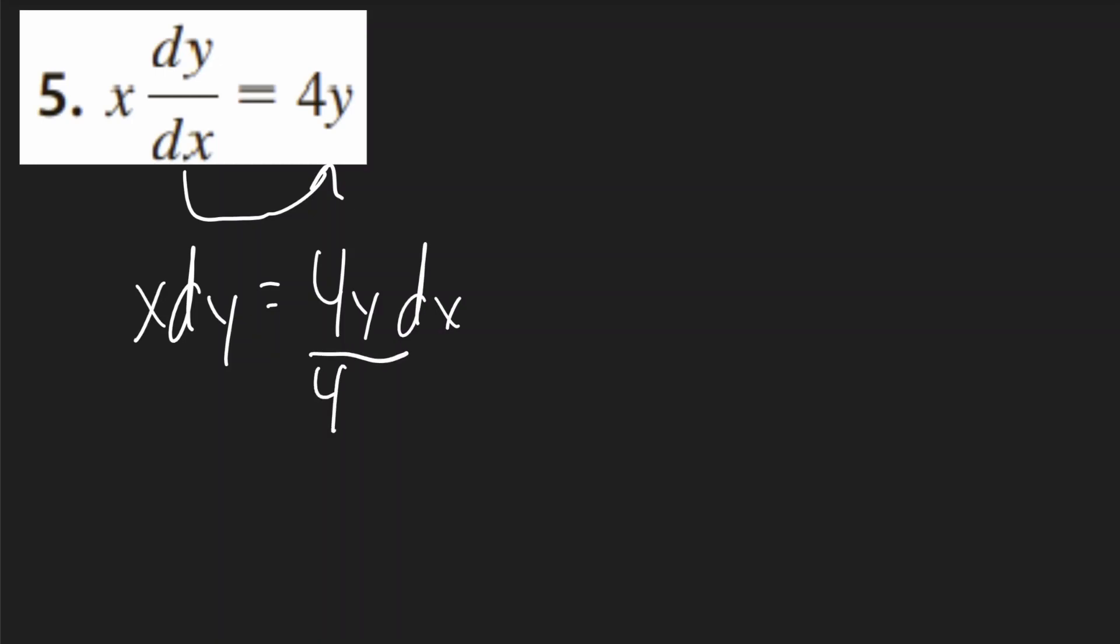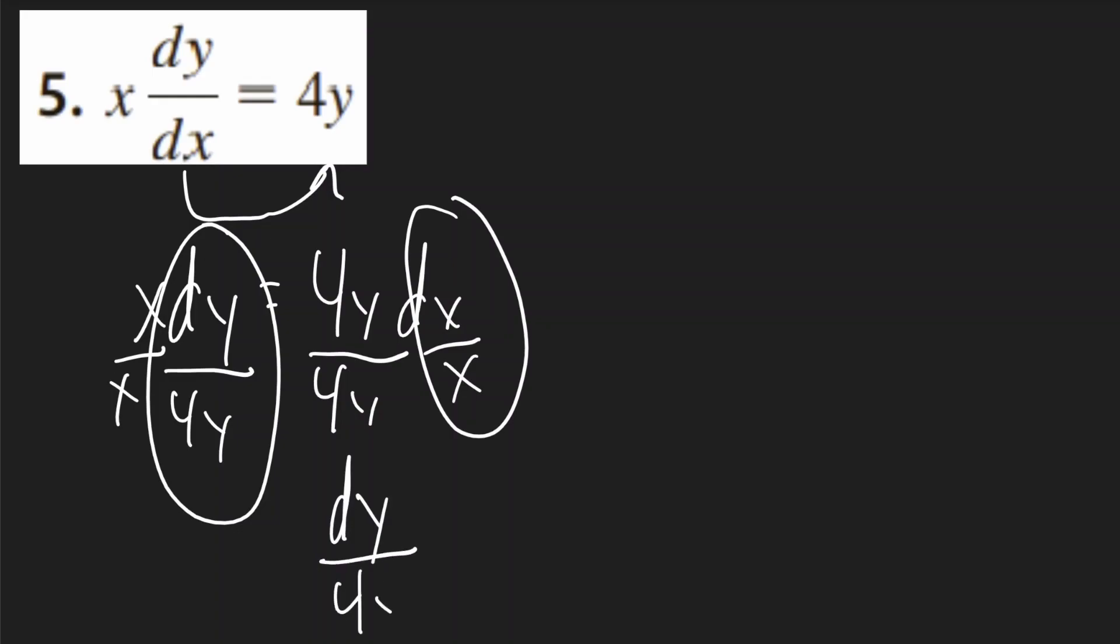Now I'm going to divide the 4y term to the other side, and I'm also going to divide the x term to both sides. So I'll have dy over 4y on the left and dx over x on the right. I'll write this here, so it'll be dy over 4y is equal to dx over x.